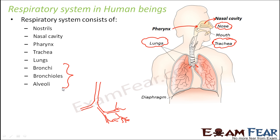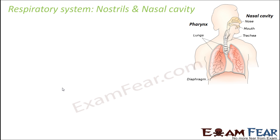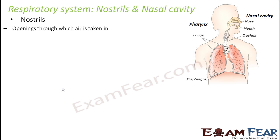Those are the various parts of the respiratory system, and we will now discuss each part in detail. First, nostrils and the nasal cavity. The purpose of nostrils is that they are openings through which air is taken in — we breathe in and breathe out through the nostrils. They act as an interface between the interior of our body and the external surroundings.